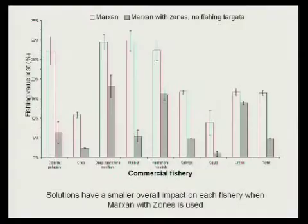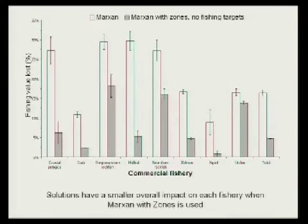We ran Marxan and Marxan with zones with no fishing targets. The result, stating the obvious, is that you get smaller overall impact to fisheries when using Marxan with zones, because it has the flexibility of addressing fishery-specific costs per zone as well as achieving targets within each zone.